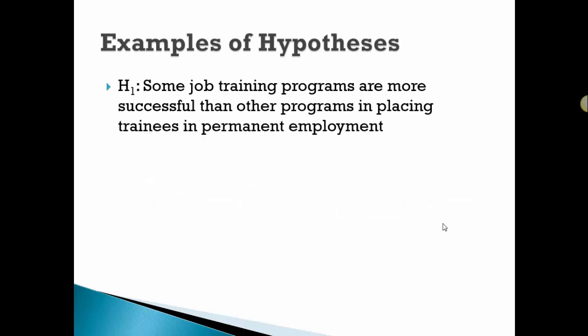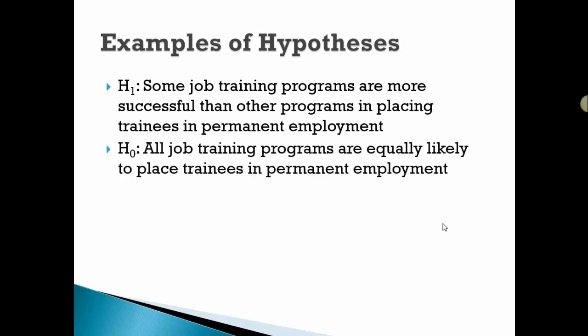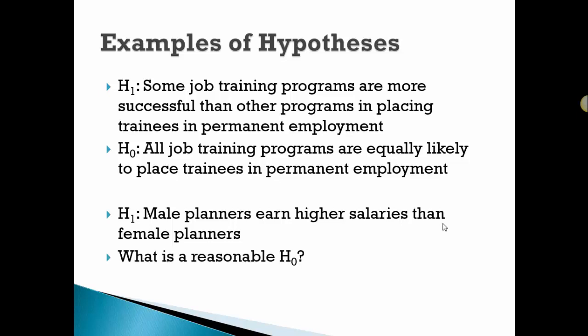Here are some examples of hypotheses, of research hypotheses. Some job training programs are more successful than other programs in placing employees or trainees in permanent employment. The null would be that all the programs are equally likely. There's another research hypothesis: male planners earn higher salaries than females. What's a reasonable null there? That the gender is not related, or the males and the females earn the same salaries.